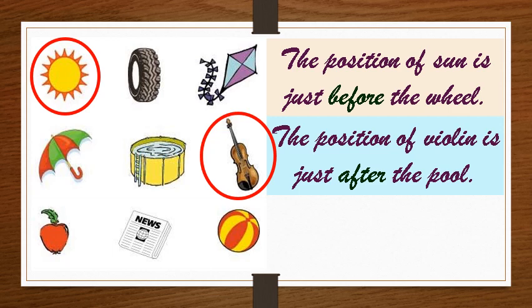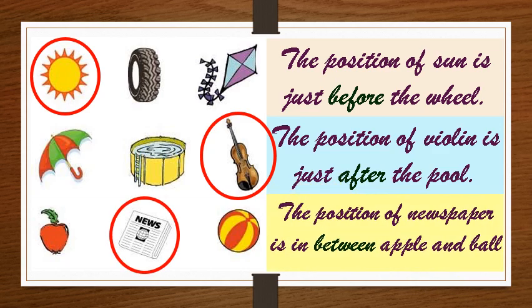In the third set, let us ring the object that comes in between the apple and the ball. The position of newspaper is in between the apple and the ball.